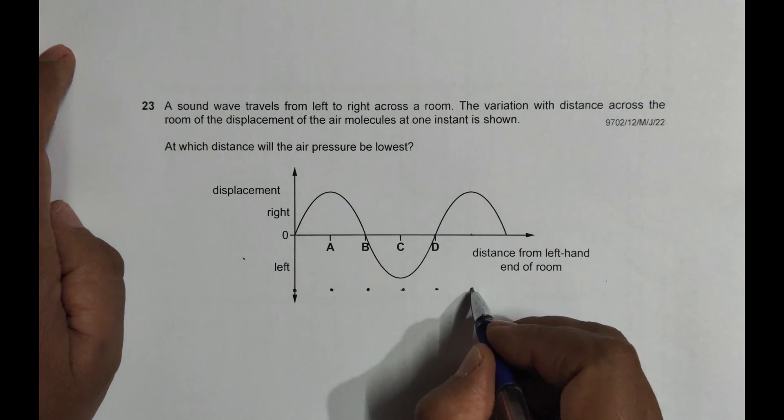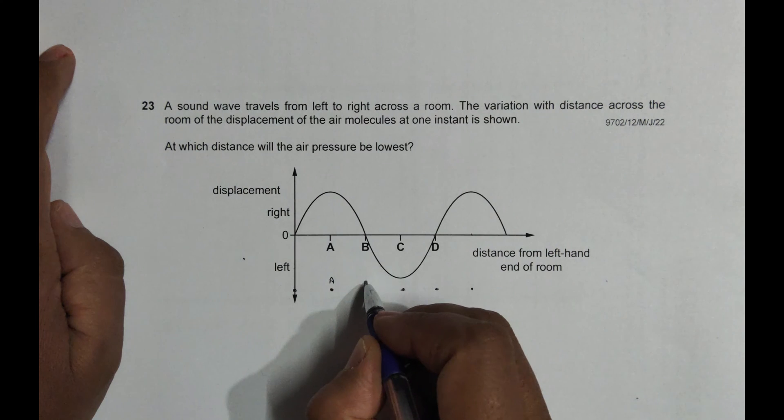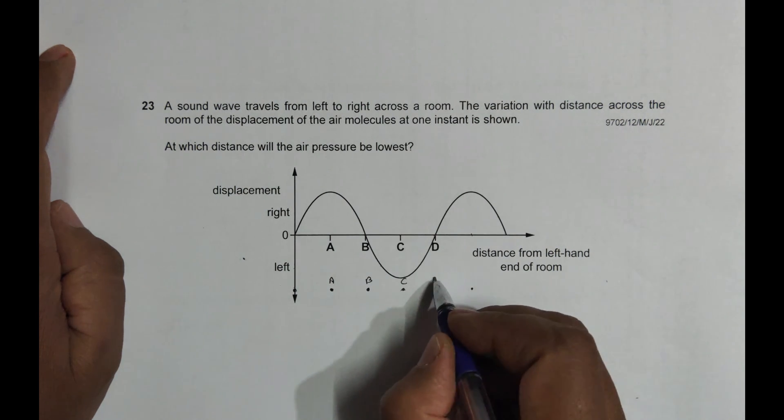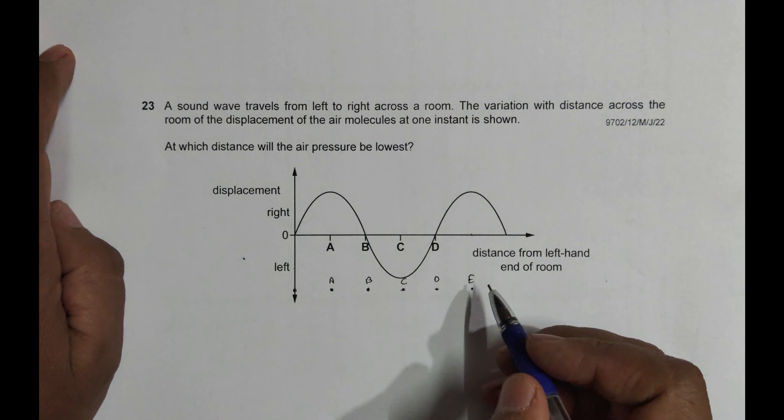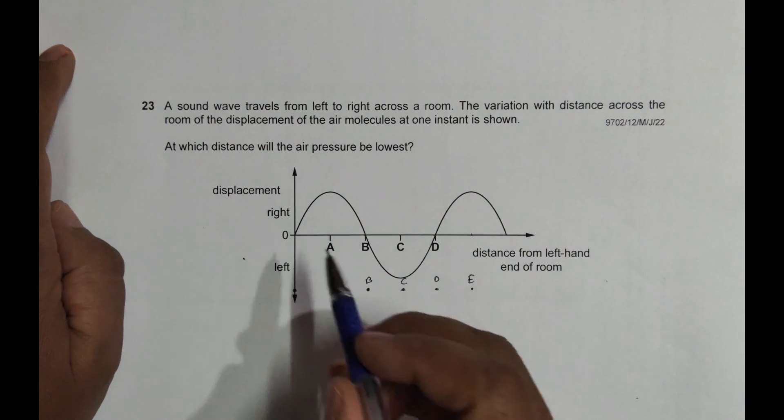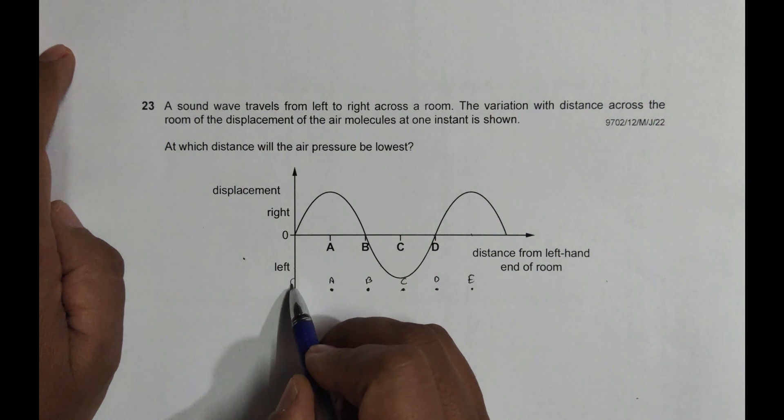and let me say one more particle here, it is E. So this is A, B, C, D, E, all are equidistant, and this is when they are all in equilibrium or when the sound is not traveling.